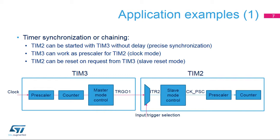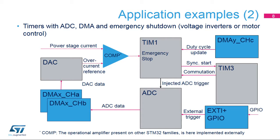Timers can also be triggered by a short-circuit detection on a digital filter for sigma-delta modulators, when a USB start-of-frame is detected, or by a real-time clock interrupt at a given time or at a regular interval. All these use cases are enabled thanks to the propagation of these triggering signals through the Interconnect Matrix.